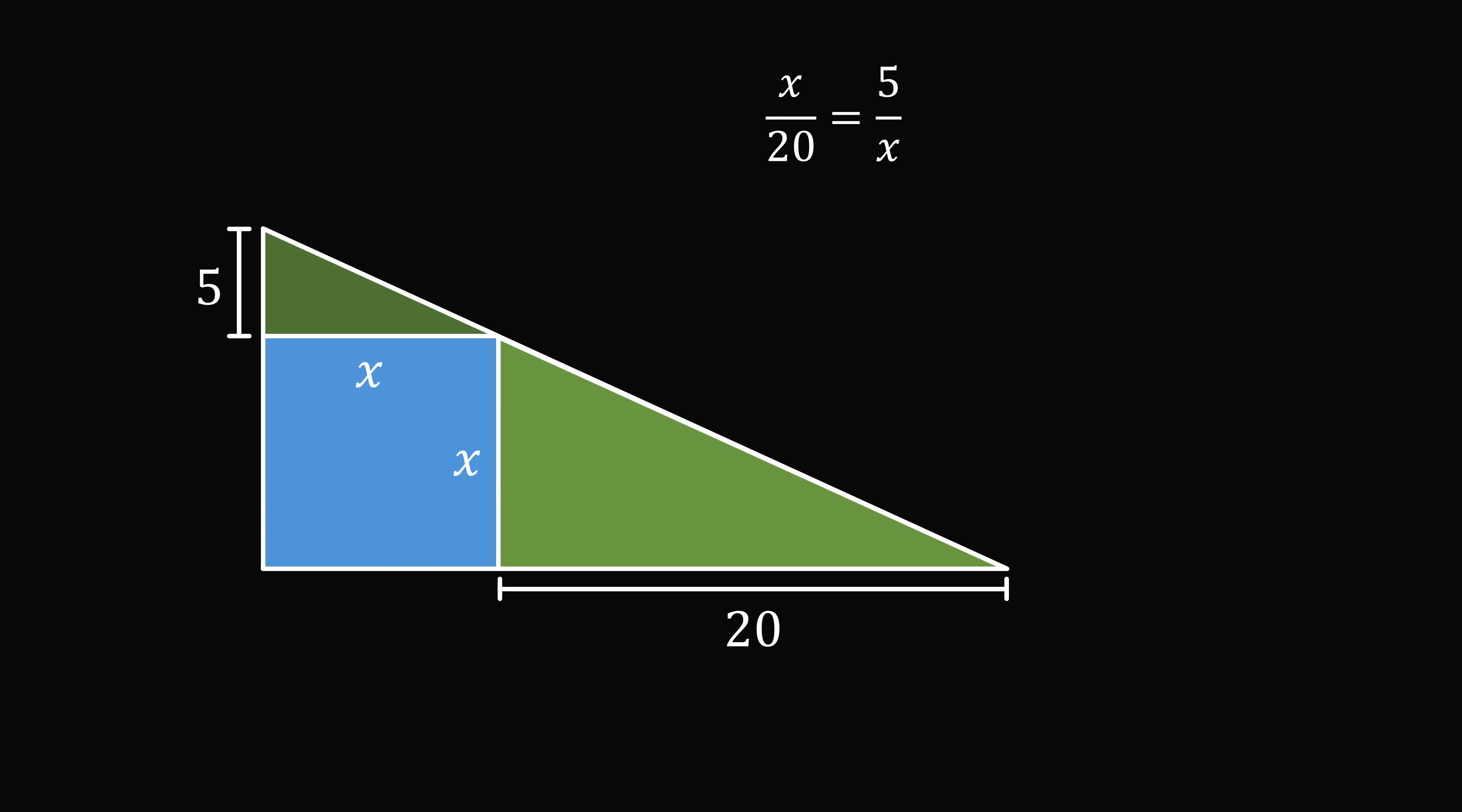So x divided by 20 is equal to 5 divided by x. Cross multiplying gives x squared is equal to 5 times 20 which equals 100. But x squared is exactly the area of the square.